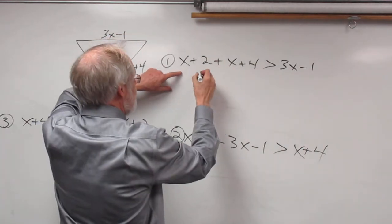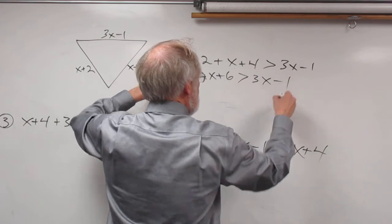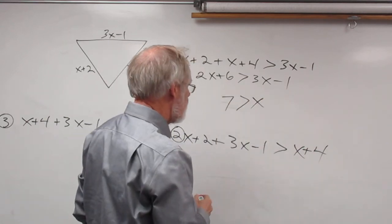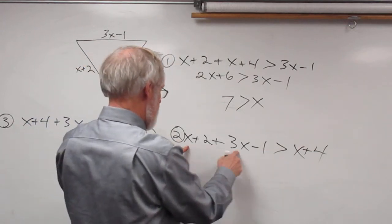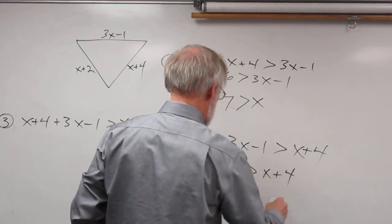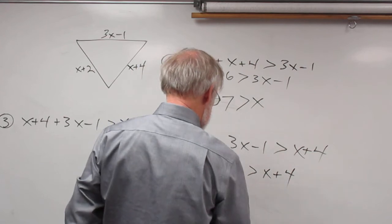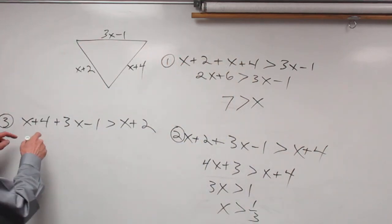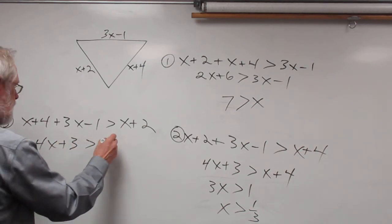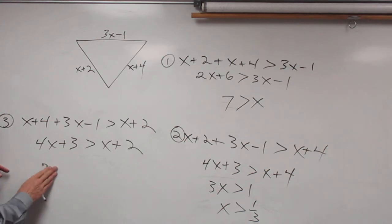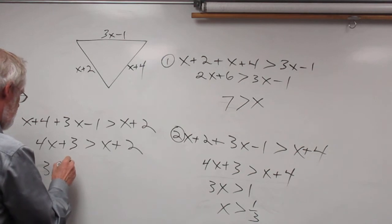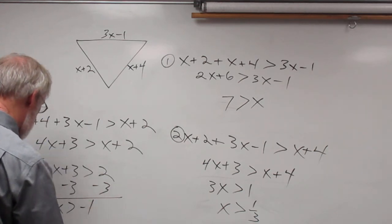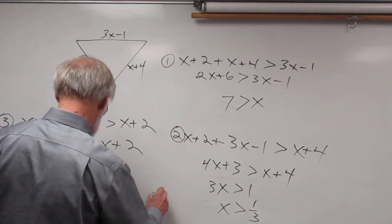Let's solve them. For inequality 1: 2x plus 6 must be greater than 3x minus 1. Subtracting 2x and adding 1 gives 7 must be greater than x, so x must be less than 7. For inequality 2: 4x plus 1 must be greater than x plus 4, giving 3x must be greater than 3, so x must be greater than one third. For inequality 3: 4x plus 3 must be greater than x plus 2, giving 3x must be greater than negative 1, so x must be greater than negative one third.